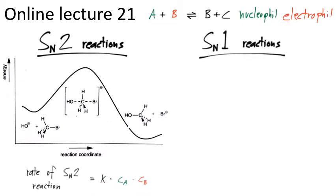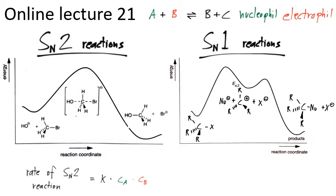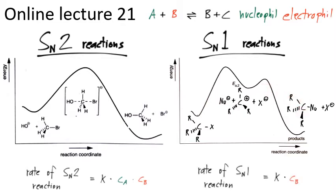For SN1 reactions on the other hand, these are two-step reactions and the rate limiting step is the formation of a carbocation. Only the carbocation then reacts with the nucleophile to produce the product. That's why it is a first order reaction — it only depends on the concentration of the halogeno alkane, since this is the rate determining step.